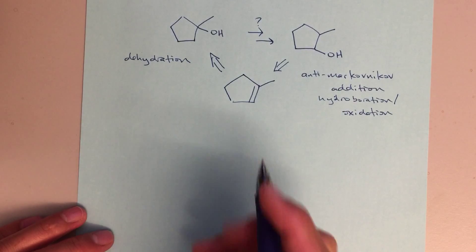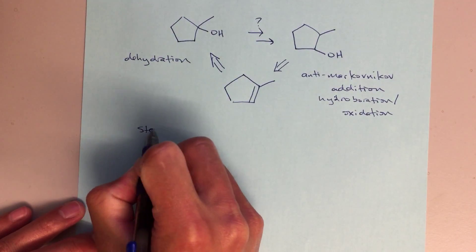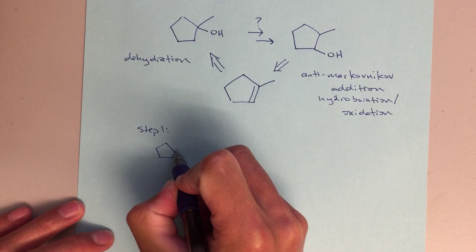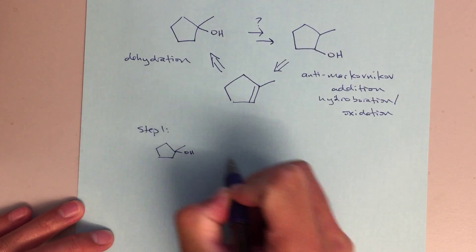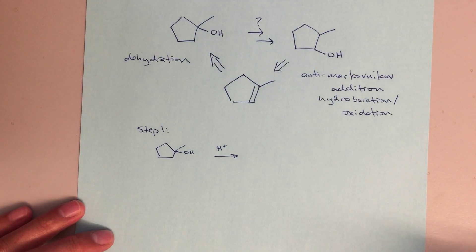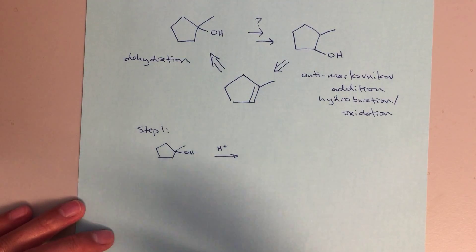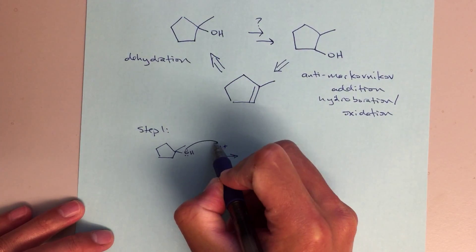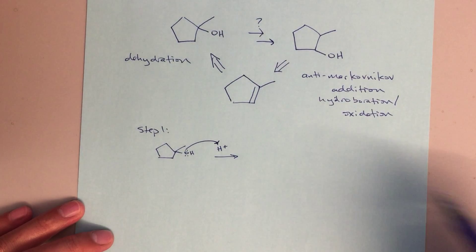So let's go ahead and write this out. Step one, I've got my alcohol and I'm going to put H+ here. H+ means strong acid; sulfuric acid is really the most reasonable thing that we're going to be using here, and we're going to show a protonation of that.